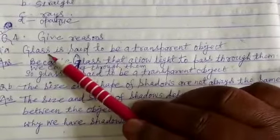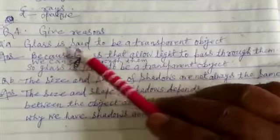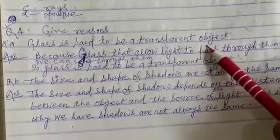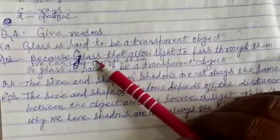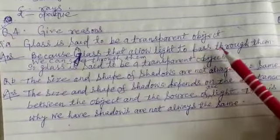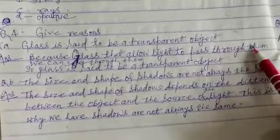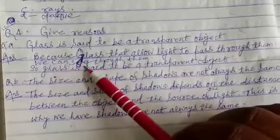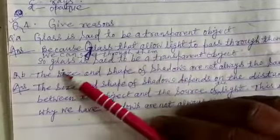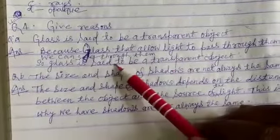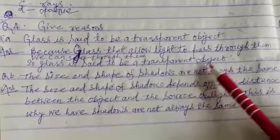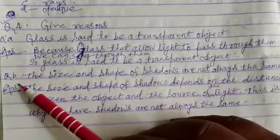Question A. Glass is said to be a transparent object. Glass allows light to pass through it, and we can see through it. So, glass is said to be a transparent object.